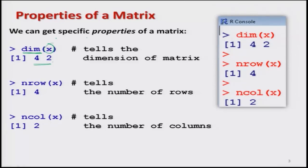If I want to know the number of rows in a matrix, the command is `nrow`. The syntax is `nrow` and inside the bracket you write the variable name containing the matrix. Here we have seen that there are 4 rows, so as soon as you try `nrow(X)`, it gives you the answer 4.